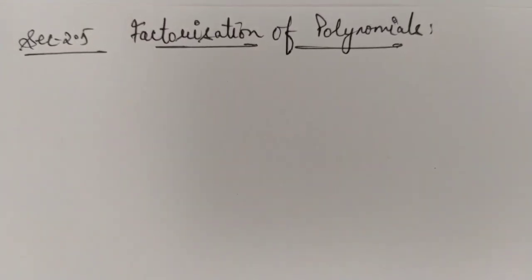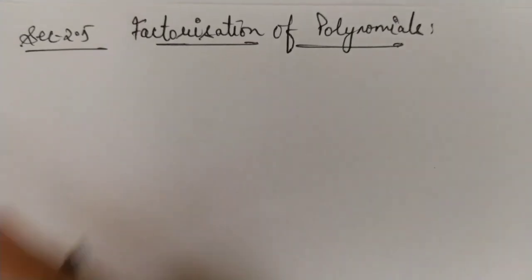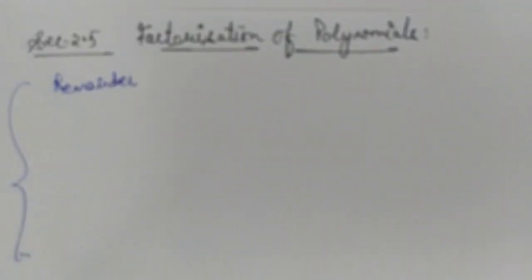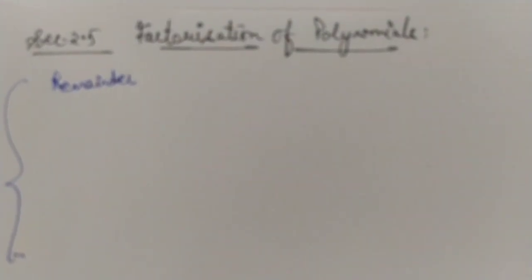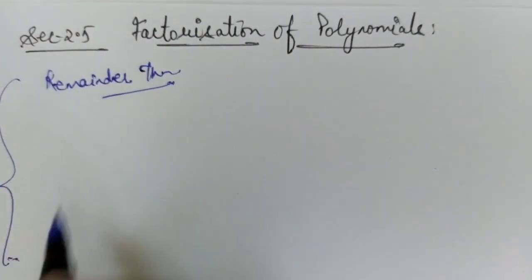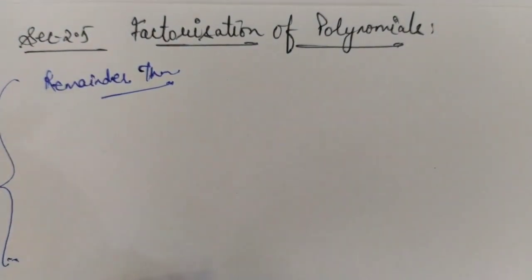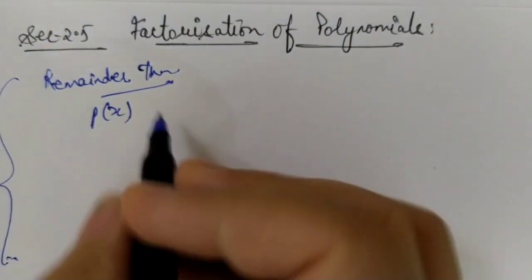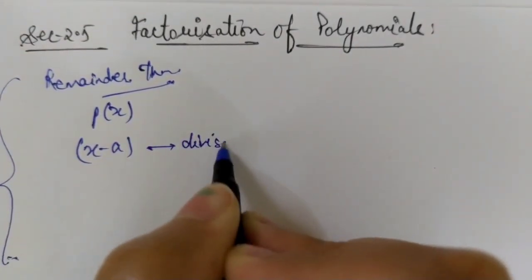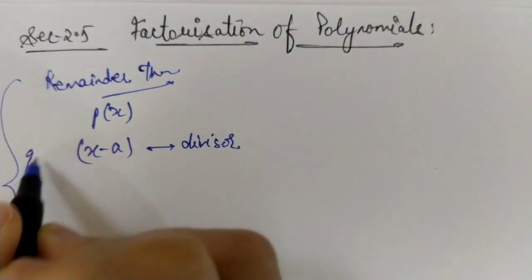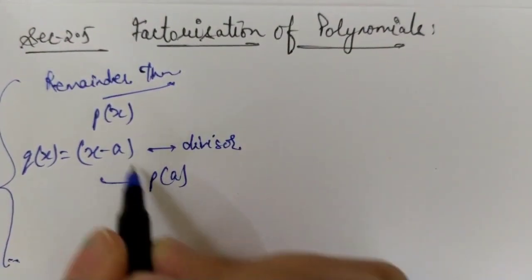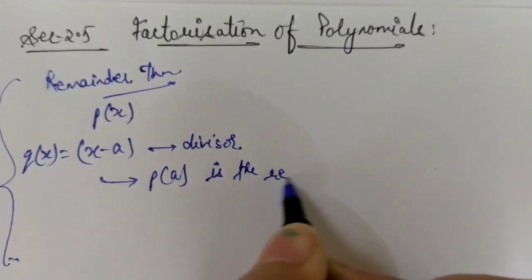Before factorization of polynomials, let us quickly look at the remainder theorem. If there is a polynomial p(x) and we have x minus a as the divisor — we can name the divisor as q(x) — then p(a) is the remainder, where a is any real number.